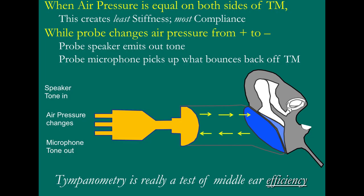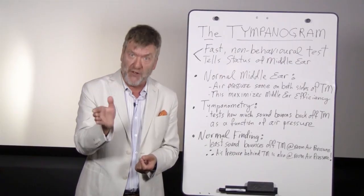Figure one shows the probe tube assembly used in tympanometry to yield a tympanogram. This probe tube is put into the patient's outer ear canal and must render an airtight seal. Once an airtight seal is obtained, you can progress through the stages of the tympanogram. There are three holes in the probe: one is a tiny speaker that presents a tone at a constant decibel level; a second is a microphone picking up sound bouncing back off the drum; and the third allows air pressure to be changed from positive to room to negative.